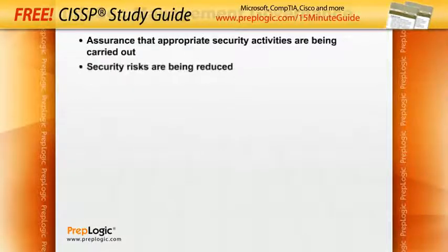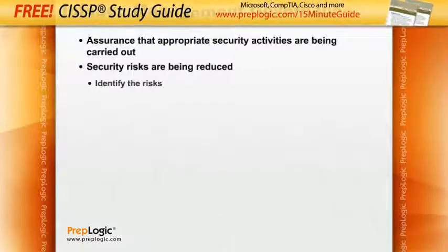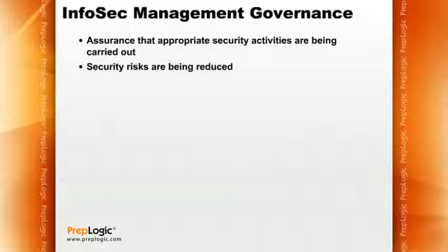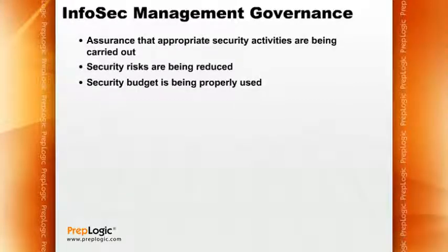Governance ensures that security risks are being reduced. To reduce security risks, you first have to identify the risks, which means identifying what is at risk. Then you implement controls to reduce these risks. Any time that we reduce risk or implement controls, we're going to have to expend some budget. So governance also ensures that your security budget is properly being used.